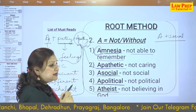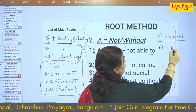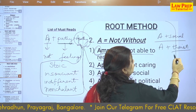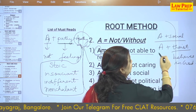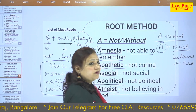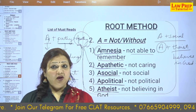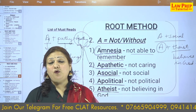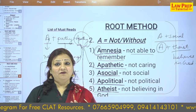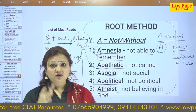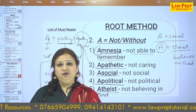ATHEIST: A plus theist. A theist is one who believes in God, so an atheist is a person who does not believe in God. Do not get confused — a person who does not believe in religion is called AGNOSTIC. A person who believes that nature is the form of God is a PAGAN or PANTHEIST. A person who does not believe in idol worship is an ICONOCLAST. There is a clear difference among all these three or four terms.